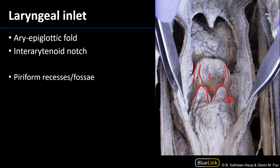With the wall of the pharynx incised and reflected away, we can see there's a space between the larynx and the wall of the pharynx. These are known as the piriform recesses, or piriform fossae. Sometimes materials that are consumed may get stuck here, and a person might feel as though there's a lump in their throat.